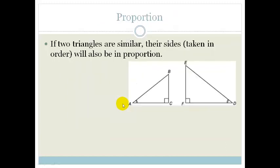Let's look at what else we know. We also know that if two triangles are similar, their sides taken in order will also be in proportion. In other words, the length of BA over the length of AC will be in proportion to the length of ED over DF.